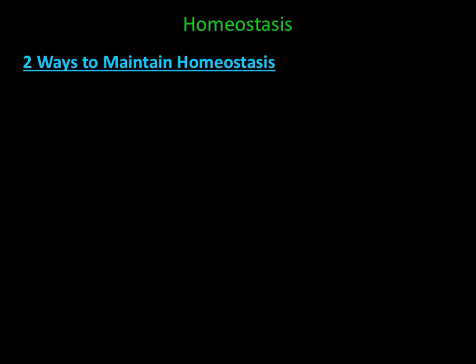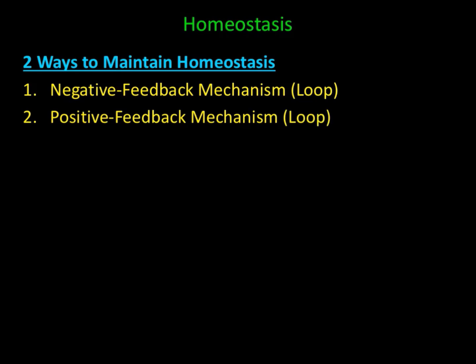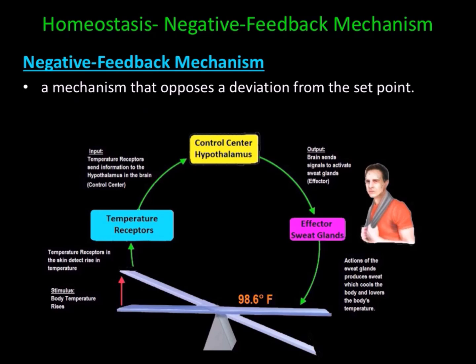There are two mechanisms which help maintain homeostasis. The first is a negative feedback mechanism, and the second is a positive feedback mechanism. A negative feedback mechanism is a mechanism that opposes a deviation from the set point, and it is the most common regulation mechanism to help maintain homeostasis. In the illustration for body temperature, 98.6 represents the set point. A deviation occurs when body temperature rises. Temperature receptors in the skin detect the rise, then send information to the hypothalamus in the brain. The brain sends signals to activate sweat glands, causing them to produce sweat, which cools the body and lowers its temperature. Sweating opposes the initial rise in body temperature.